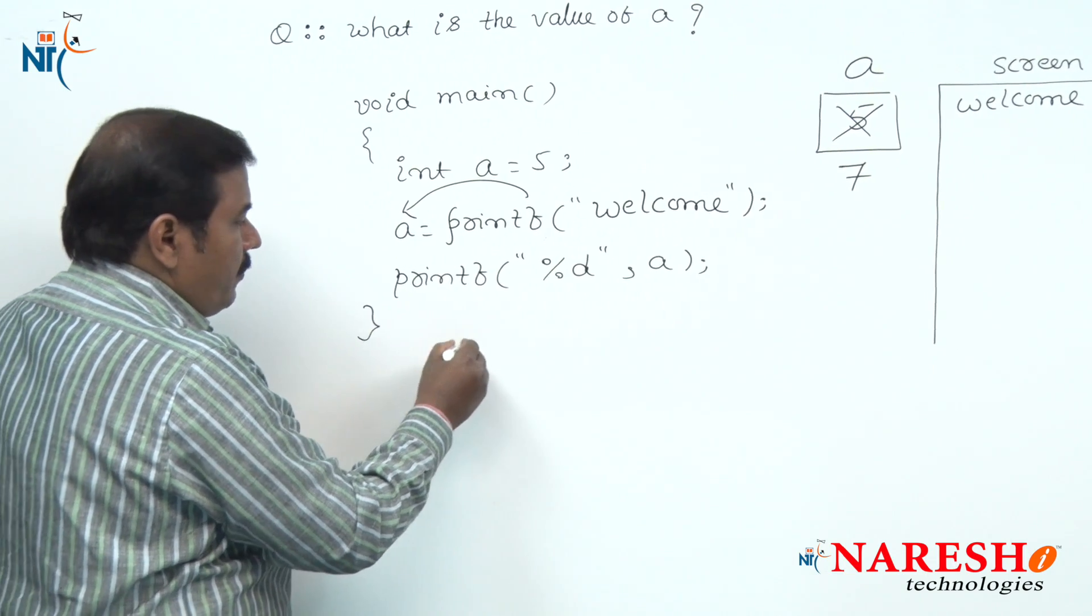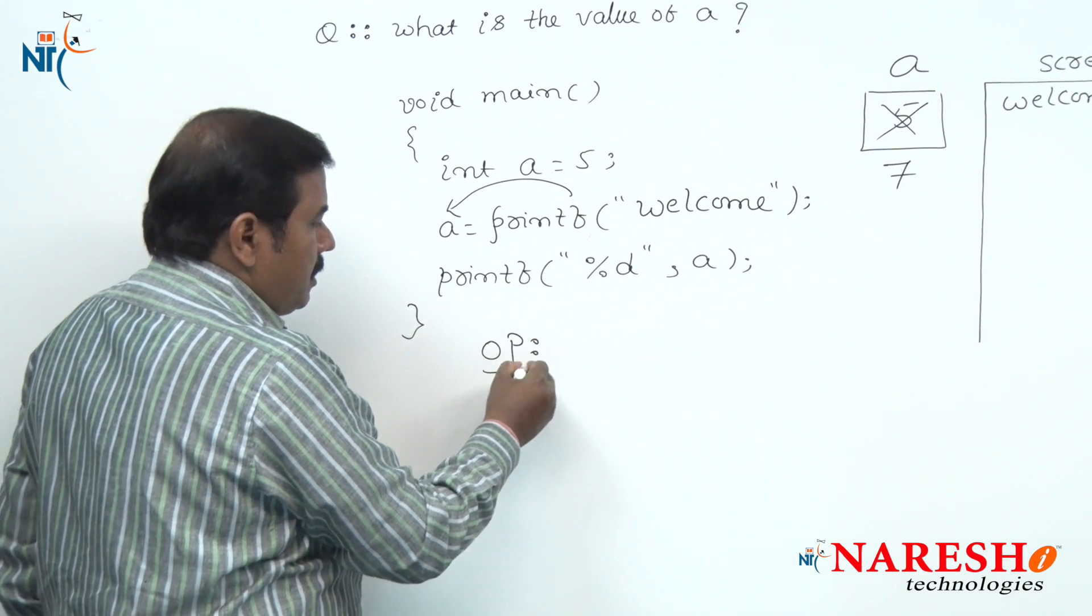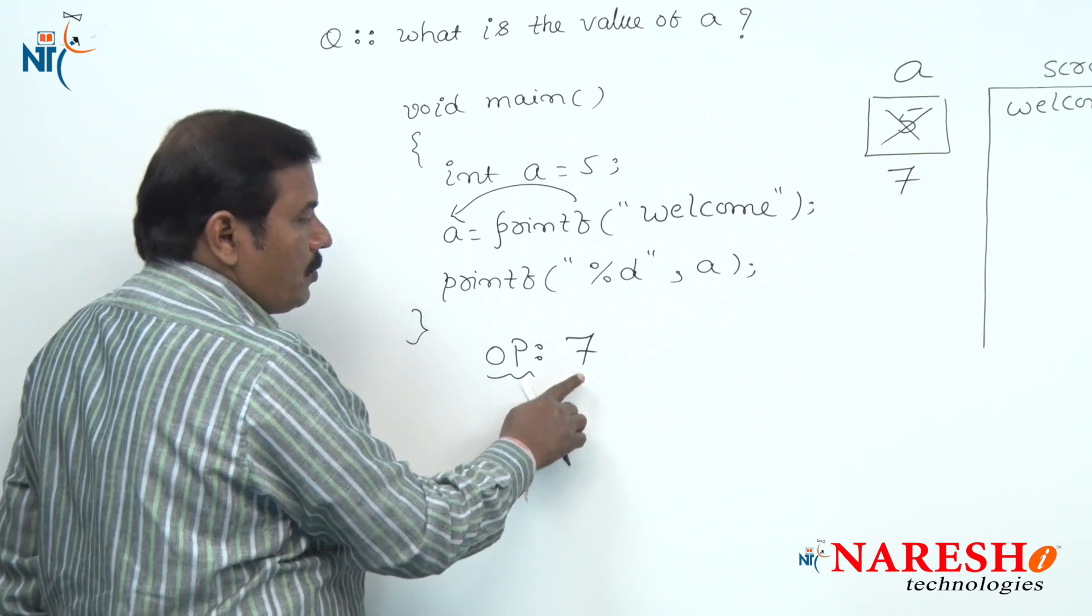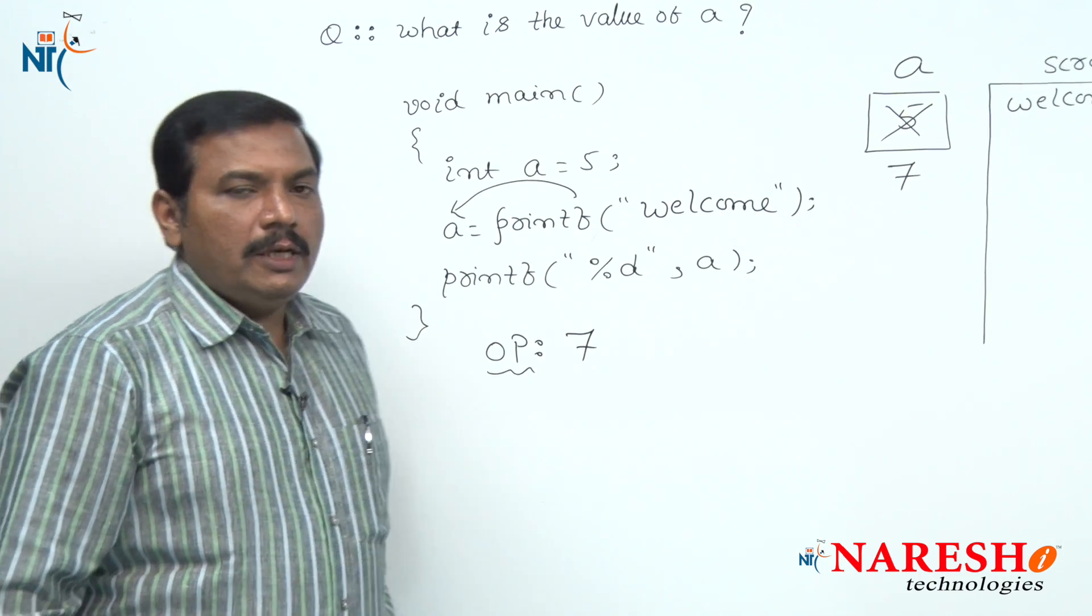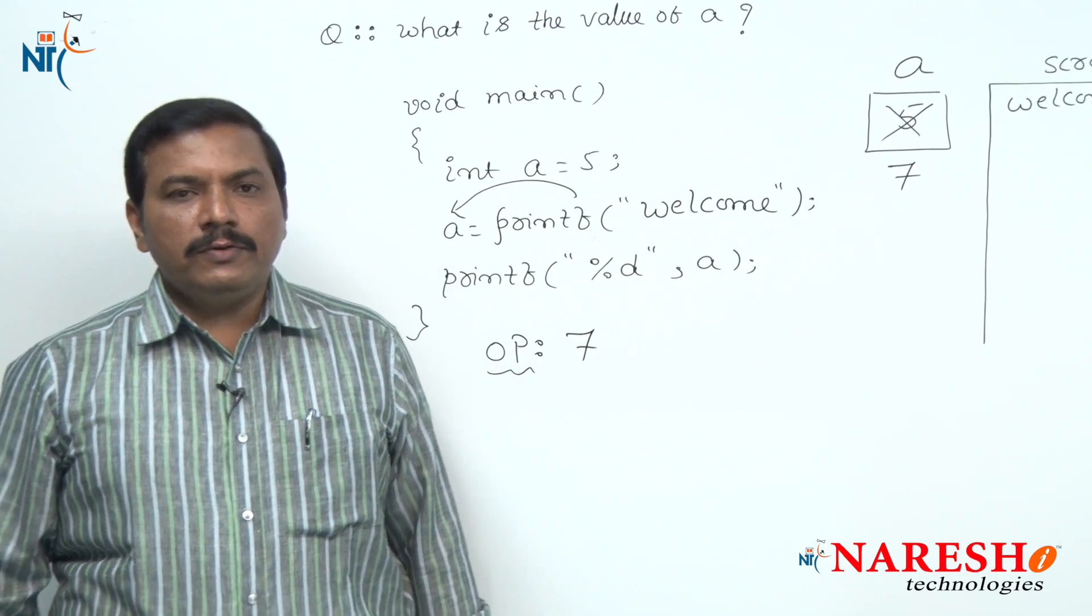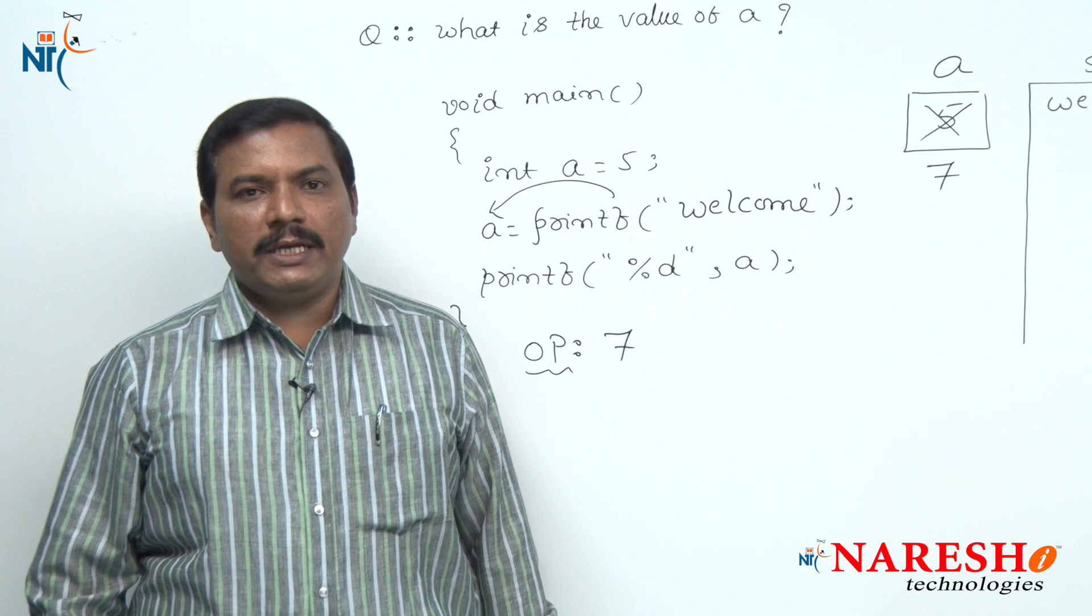So hence the value of A is here 7, that is the final output of this code. Thank you for watching this video. For more videos subscribe to Naresh IT channel.